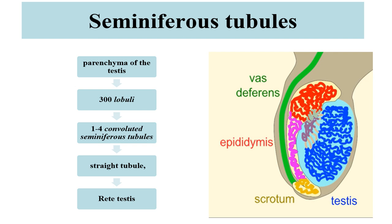The seminiferous tubular compartment is the area of spermatogenesis. From the mediastinum, delicate fibrous septa radiate towards the tunica albuginea and divide the parenchyma into about 300 lobules. Each lobule contains 1–4 convoluted seminiferous tubules, and each seminiferous tubule continues near the mediastinum into a straight tubule. Seminiferous tubules may constitute up to 90% of the testis. The tubule wall consists of multi-layered germinal cells containing spermatogenic cells and Sertoli cells. The seminiferous tubules from different areas unite to form a network of interconnected tubes — the rete testis.